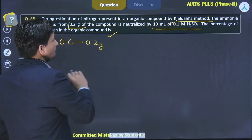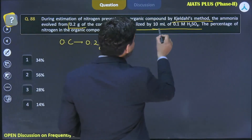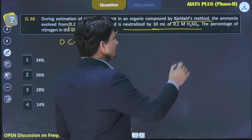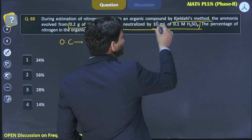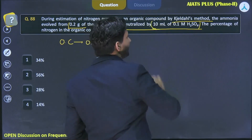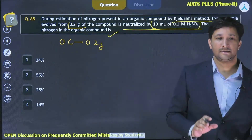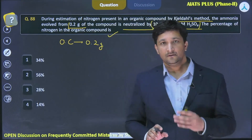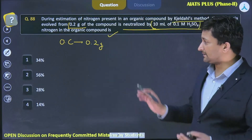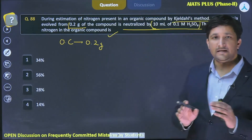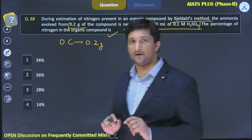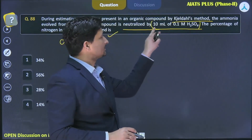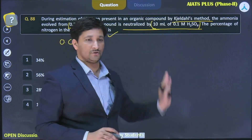It was found that the ammonia produced is neutralized by 10 mL of 0.1 molar H₂SO₄. This is the amount and concentration of H₂SO₄ used for neutralizing the ammonia produced. We can equate this to find out how much ammonia will react with this amount of H₂SO₄.